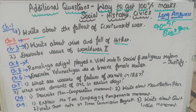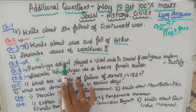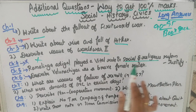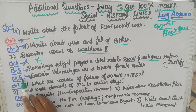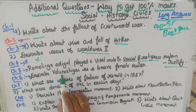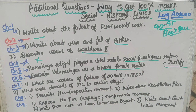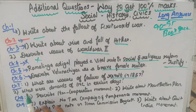Describe the cause of World War 2. In chapter 4, you can ask that. In chapter 5, Ramalinga had played a vital role in social and religious reform — this is a long question. In chapter 6, describe Velu Nachiyar as a brave female ruler.